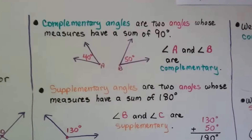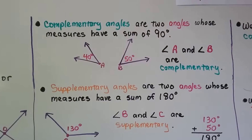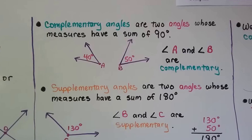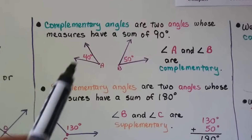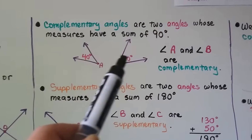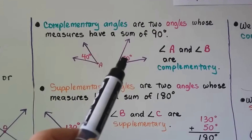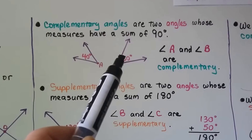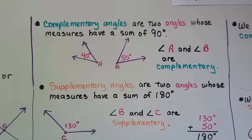Complementary angles are two angles whose measures have a sum of 90 degrees. Here we have angle A and angle B: 40 plus 50 is 90 degrees, so angle A and angle B are complementary.